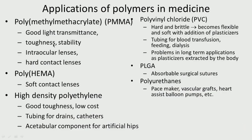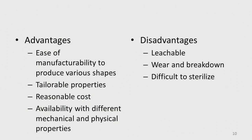Summary of applications: PMMA — good light transparency — used for hard contact lenses and intraocular lenses. HEMA — soft contact lenses. High-density polyethylene — tough, low cost — used in tubing, drain catheters, acetabular components for artificial hips and knee joints. PVC is hard and brittle but becomes flexible with plasticizers; used for blood transfusion tubing, feeding, and dialysis (short-term only as plasticizers may leach out). PLGA — absorbable surgical sutures. Polyurethanes — very flexible, almost like rubber — used in pacemakers, vascular grafts, and heart assist balloon pumps.